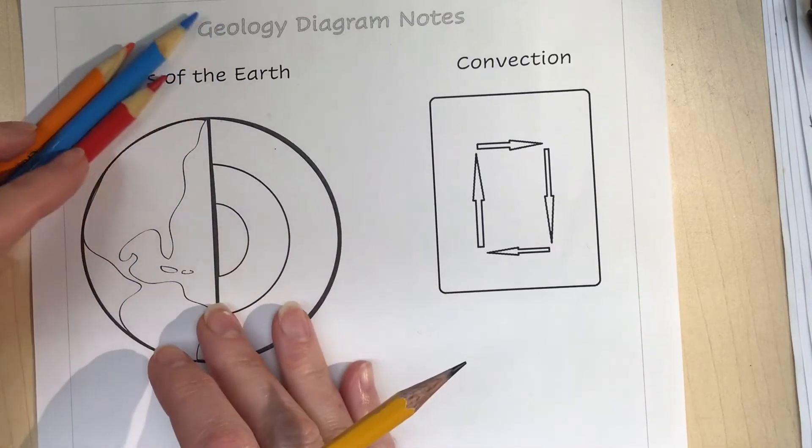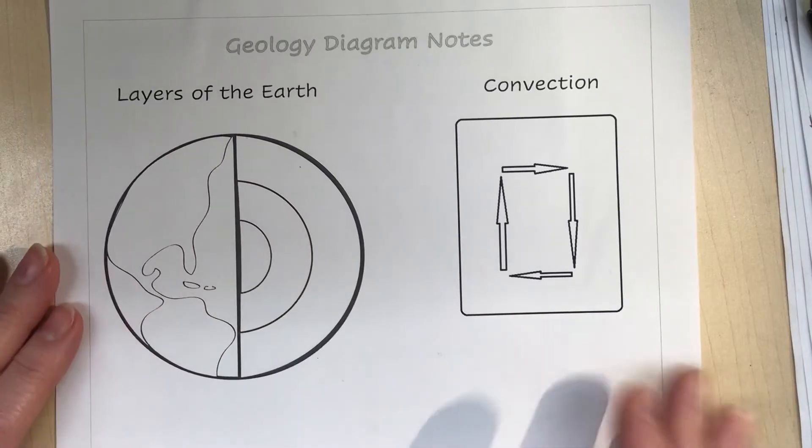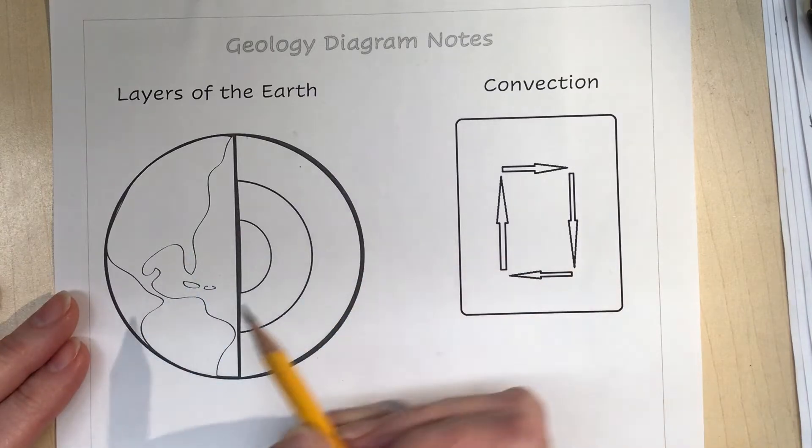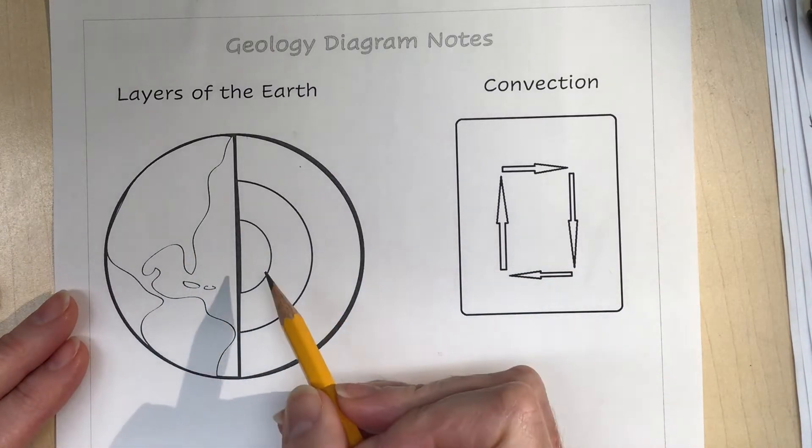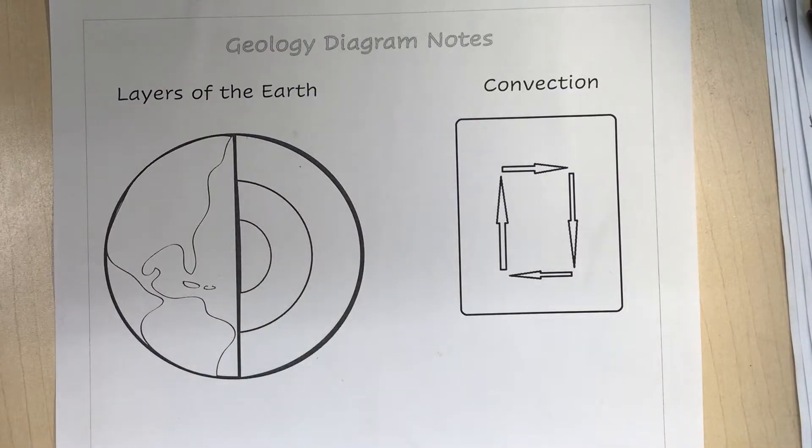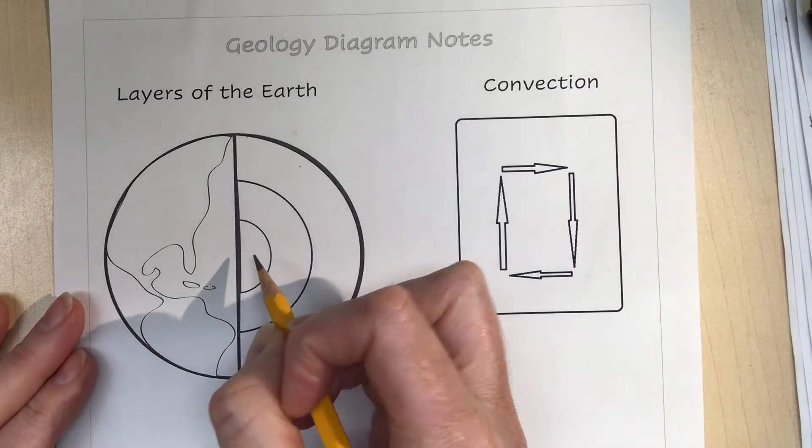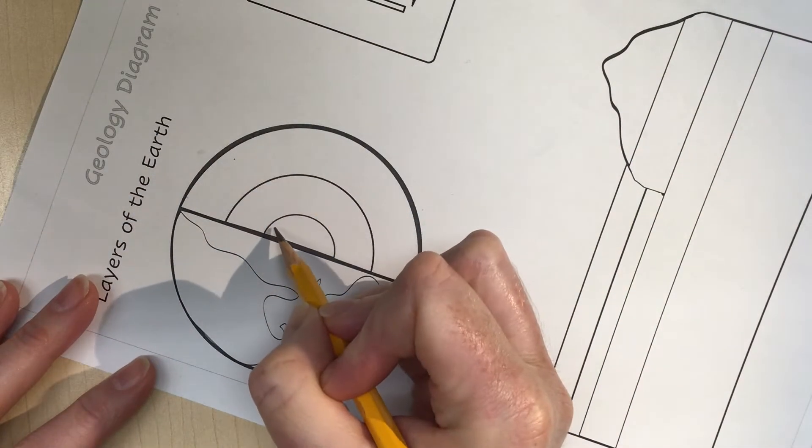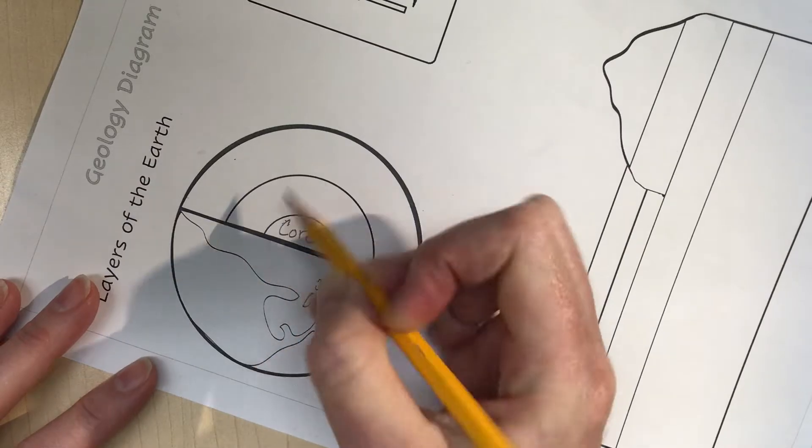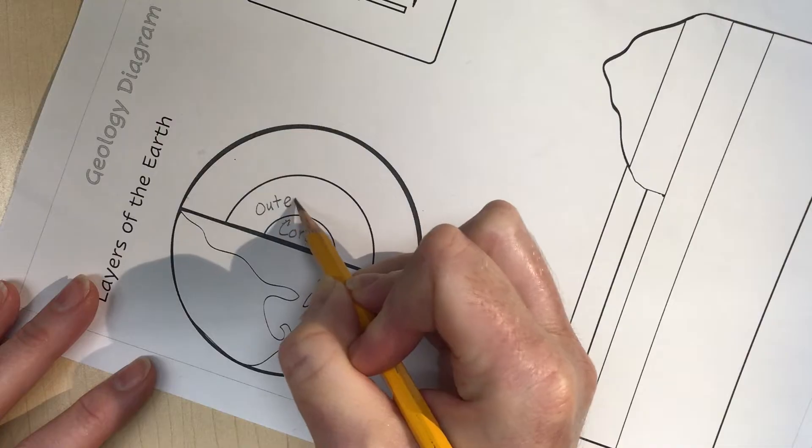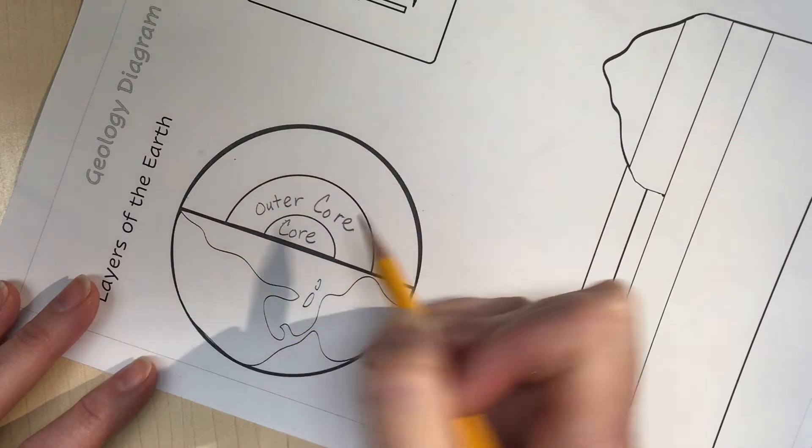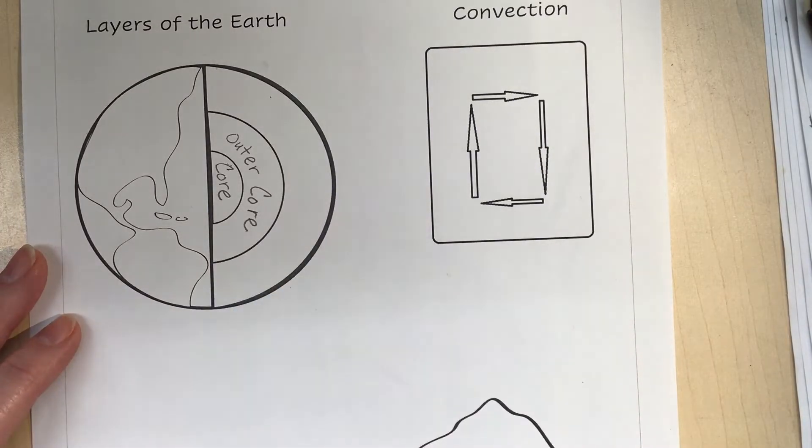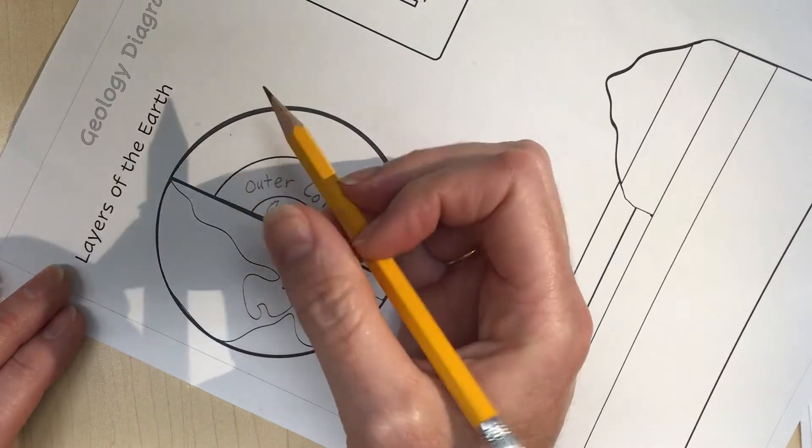There's some basic geology you need to know in AP Environmental Science. First, we're going to start with the layers of the Earth. In the very middle we have the inner core and the outer core. I'm just going to label that here. We don't talk that much about the inner core and outer core - mostly we're concerned about this next part here, which is the mantle.